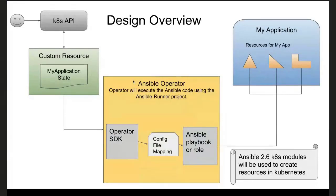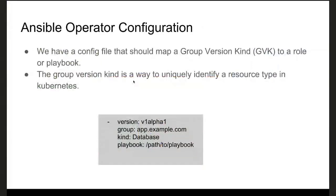There is a config file which maps the group, version, and kind of that resource to the Ansible playbook or role. The Ansible playbook or role is then run whenever an event happens on that custom resource. That playbook or role will actually create the application state in the cluster — creating all your resources and allowing you to manage your application using Ansible with the new Kubernetes modules.